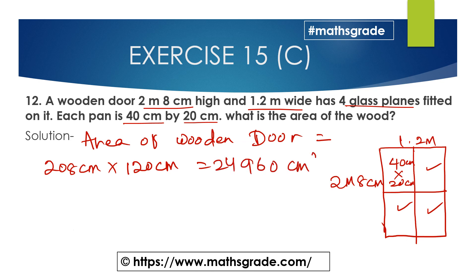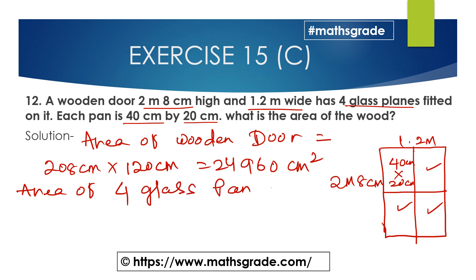For the glass panes: there are 4 glass panes, so the total area of the glass panes will be 4 multiplied by 40 multiplied by 20 centimeters square.